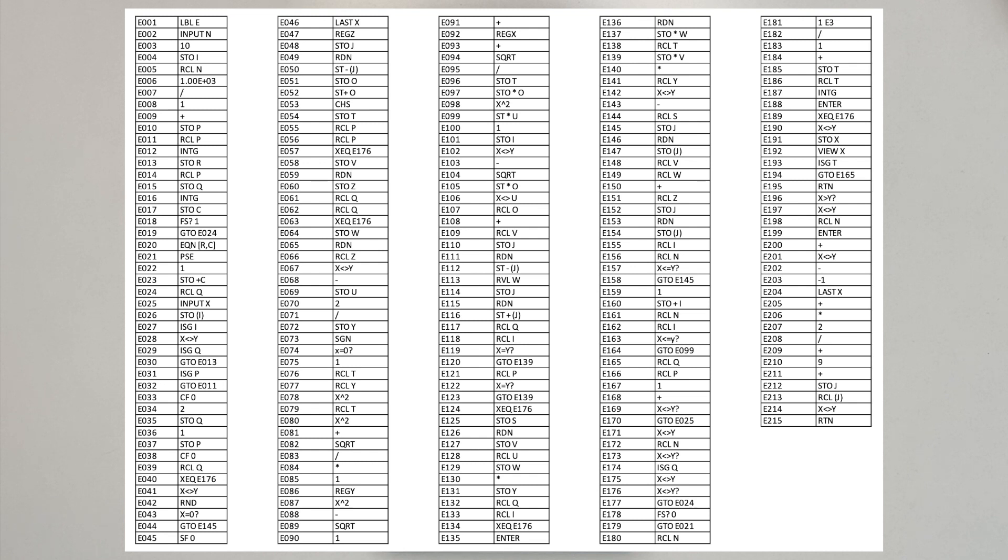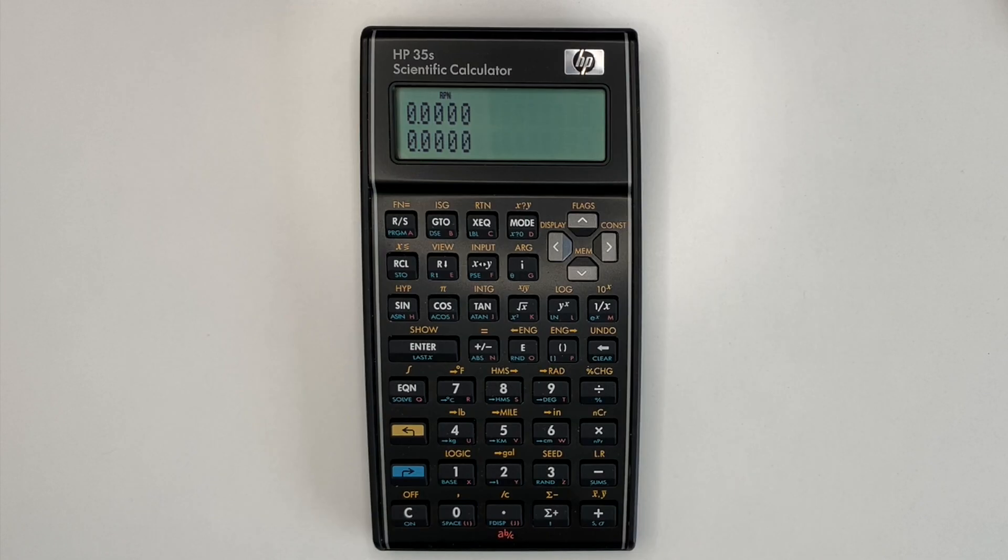The program first requests the matrix dimension n and then the matrix elements, taking into account its symmetry. Once the last required matrix element has been entered, the n eigenvalues are calculated and displayed one at a time.